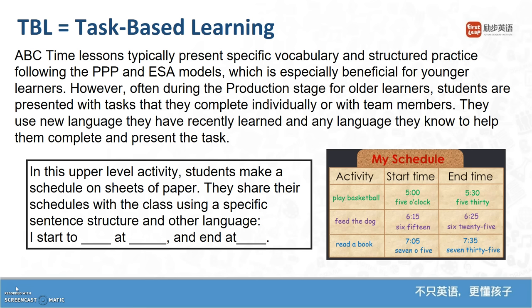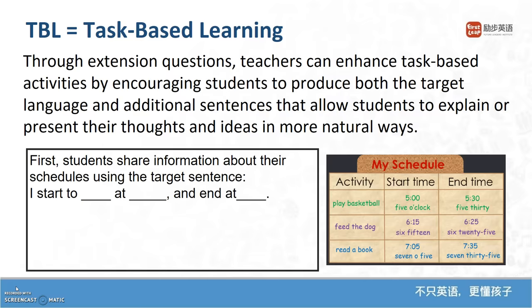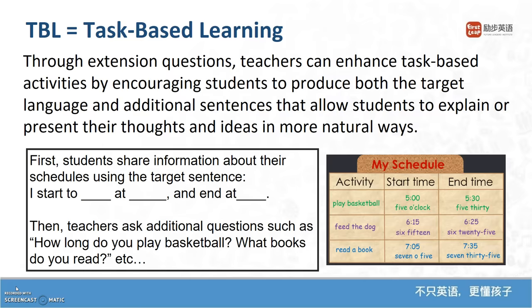However, often during the production stage for older learners, students are presented with tasks that they complete individually or with team members, using new language they have recently learned and any language they know to help them complete and present the task. Here is an example in a level 9 lesson wherein students are asked to complete the task of creating a personal schedule. The teacher introduces a target sentence: 'I start to do such and such at such and such time and end at such and such.' When presenting their schedules, students are expected to use the target sentence. Teachers can add extension questions onto the discussion, encouraging students to produce both the target language and additional language they may know, prompting more natural back-and-forth conversation about topics.